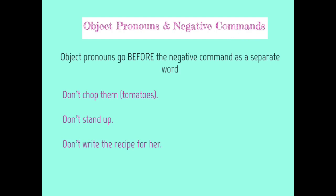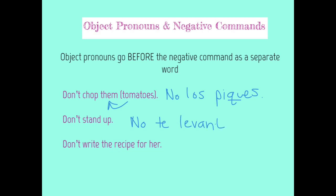Some examples. Don't chop them — the tomatoes being the 'them.' This is an example with a DOP: no los piques. The verb chop is picar, which is a CAR verb, so it has that QU spelling. The DOP goes right before the command form: no los piques. Don't stand up — here we've got a reflexive verb, levantarse as an infinitive: no te levantes. The reflexive te goes before the verb, and since it's an AR verb it gets -ES on the end.